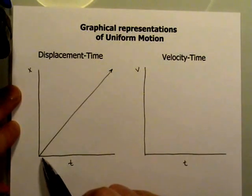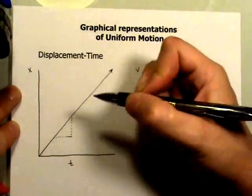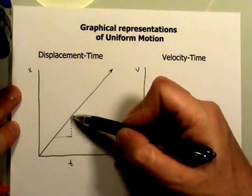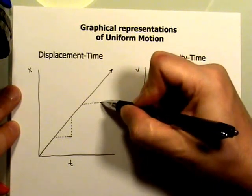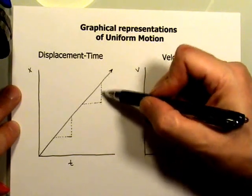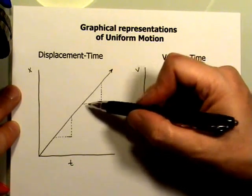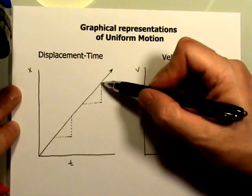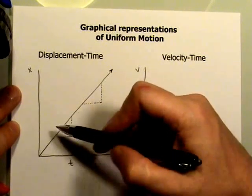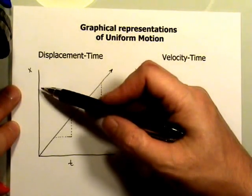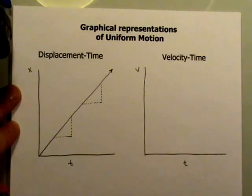For every interval of time — for example, if I choose some interval — the position increases by a certain amount over that time. If I pick that same interval again, the displacement changes by the same amount. For instance, if I pick 2 seconds and travel 10 meters, then for another 2 seconds I would also travel 10 meters. Vertically represents displacement in meters or kilometers, and the bottom axis is change in time in seconds, minutes, or hours.